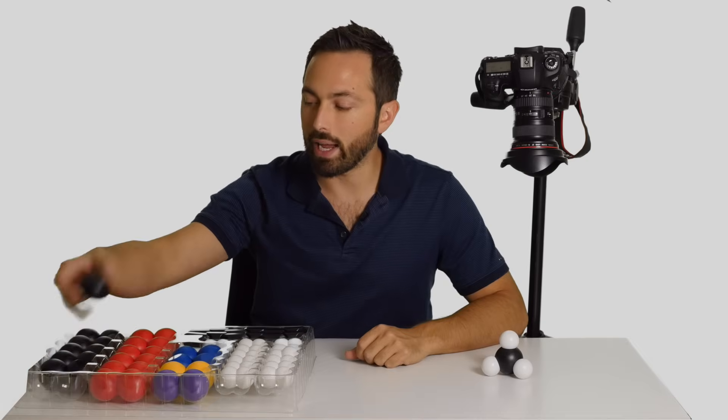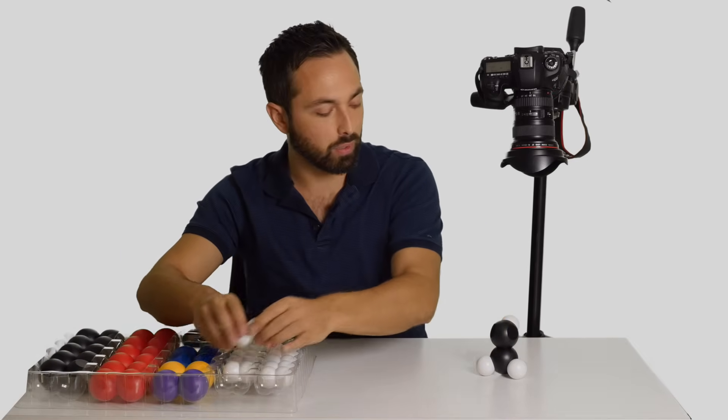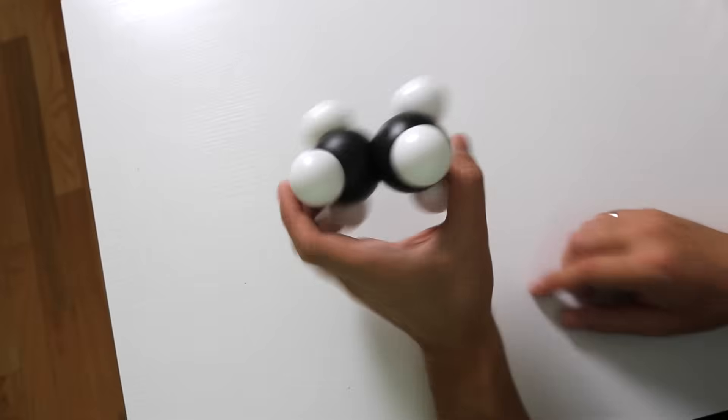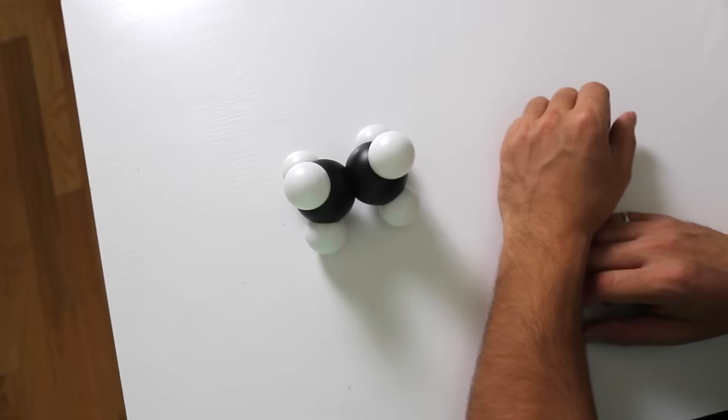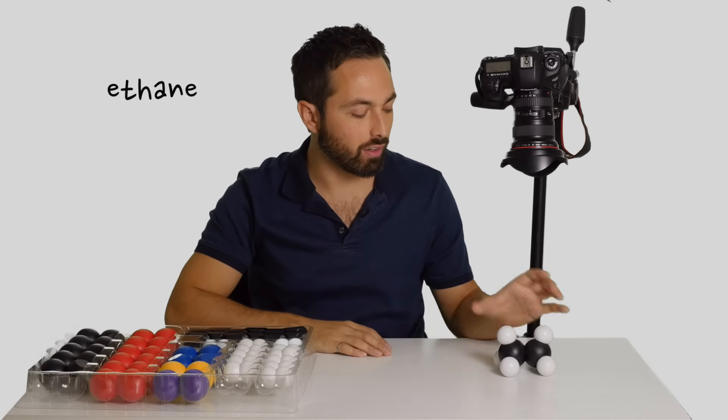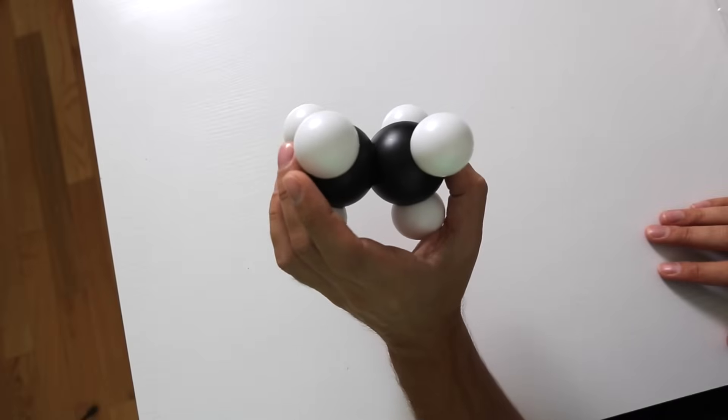What if we add another carbon and we complete this molecule with more hydrogens? Well, we've got two carbons now, and so that would be eth as the root of that word, and the ending again, ane. So this is ethane.